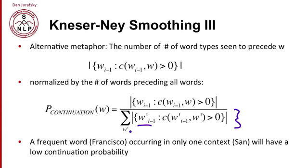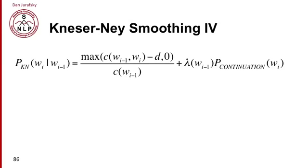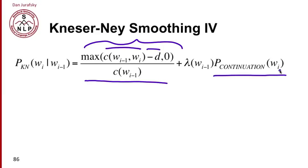So in other words, with this kind of Kneser-Ney model, a frequent word like Francisco that occurs only in one context like San will have a low continuation probability. So if we put together the intuition of absolute discounting with the Kneser-Ney probability for the lower order n-gram, we have the Kneser-Ney smoothing algorithm. So, for the bigram itself, we just have absolute discounting. We take the bigram count, we subtract some d discount. And I've just shown here that we take the max of that and 0 because obviously if the discount happens to be higher than the probability, we don't want a negative probability. And we're just going to interpolate that with this same continuation probability that we just saw, p continuation of w sub i.